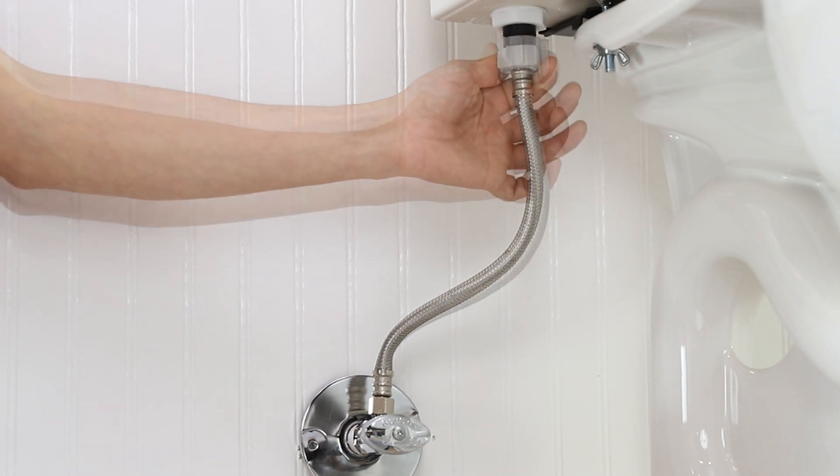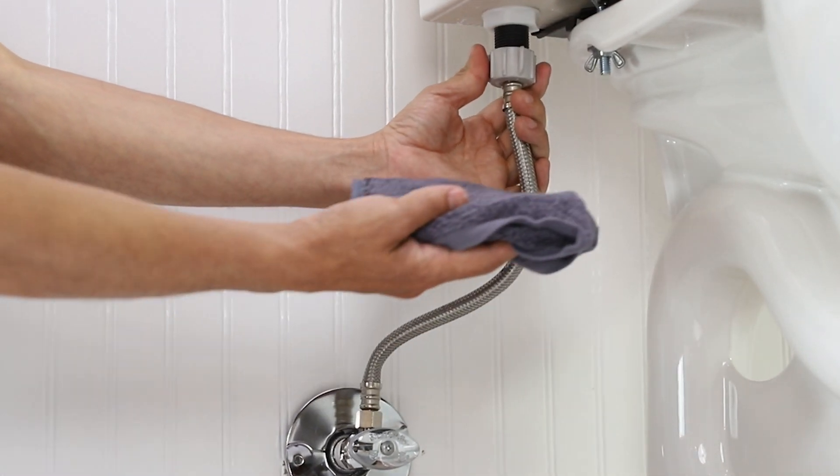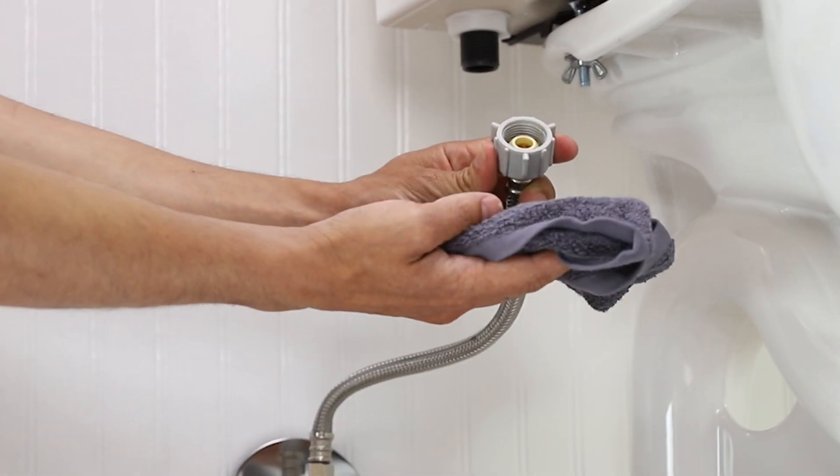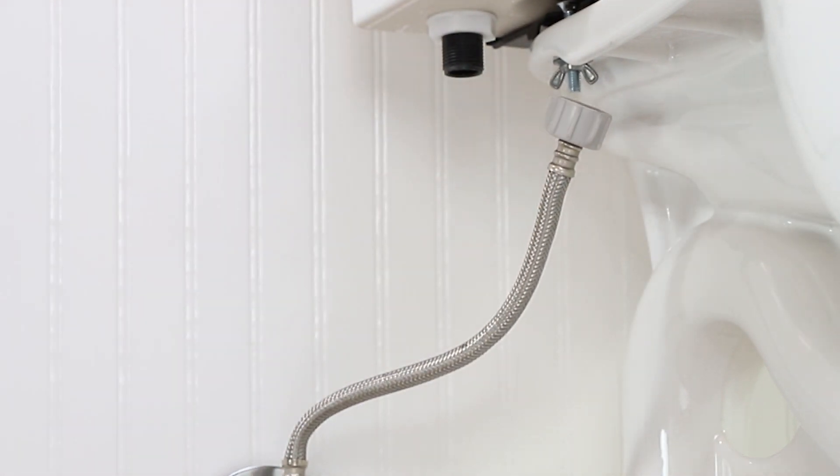Unscrew the flexible water supply line from your fill valve under the toilet tank. You may want a small bucket or towel handy to catch any residual water.